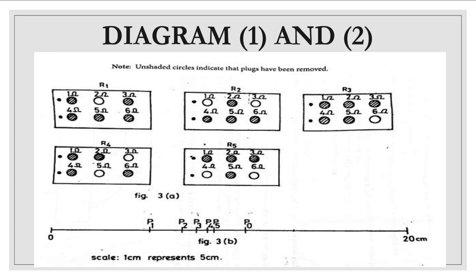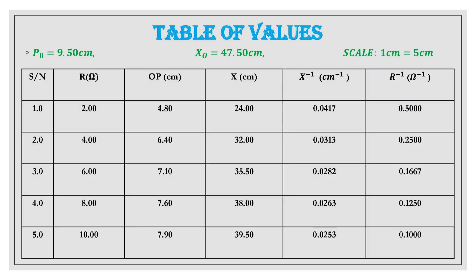So all these are captured on the table. When these measurements are done and all the readings are tabulated you can see here on the table the resistance is given 2, 4, 6, 8, 10 as provided by the drawing, and then the distance from O to P also captured. If you look at the scale for this particular drawing, the scale given is 1 cm represents 5 cm.